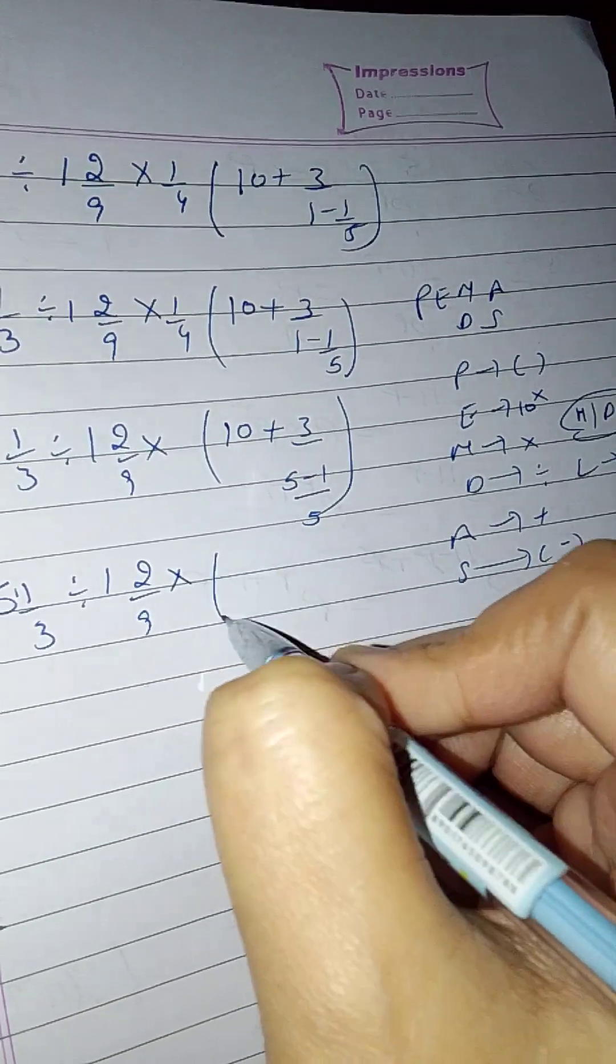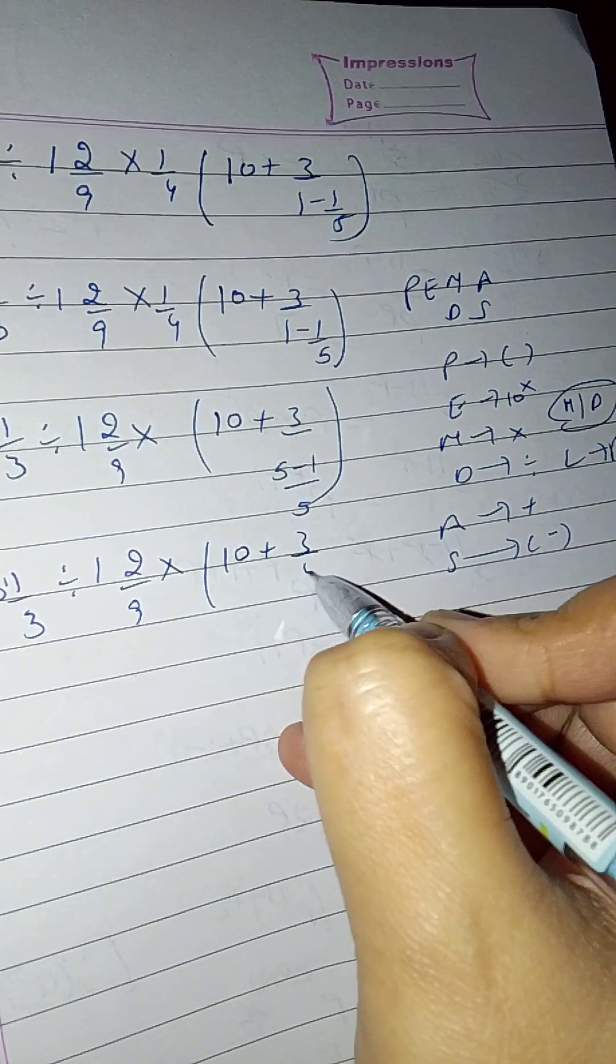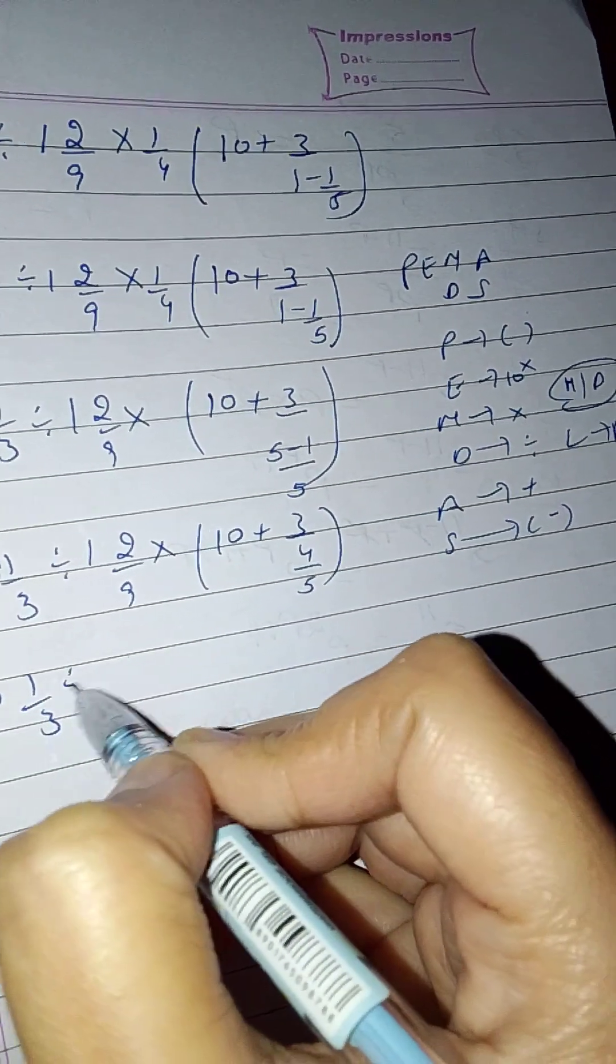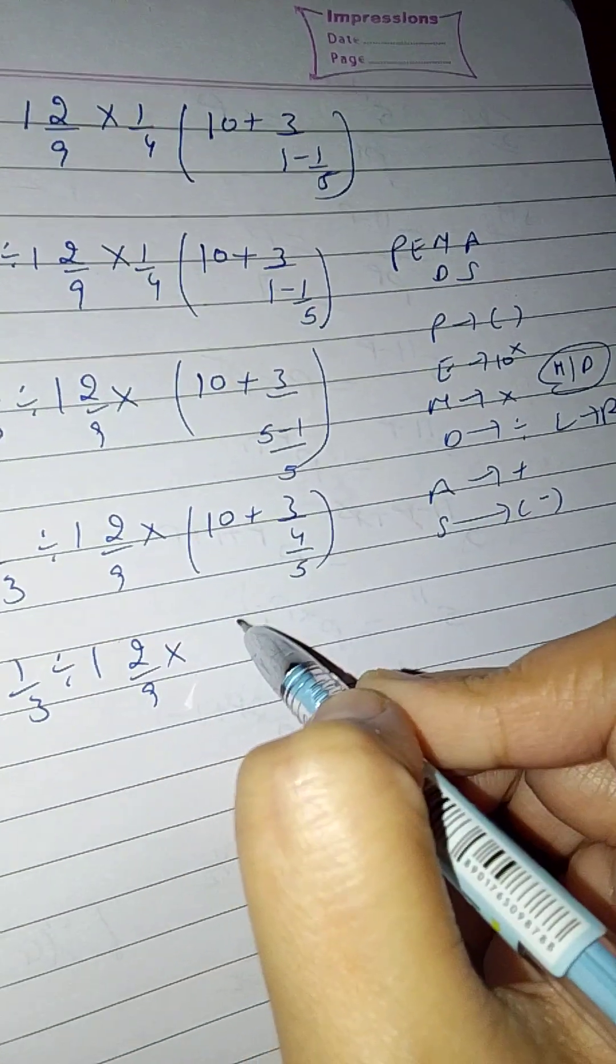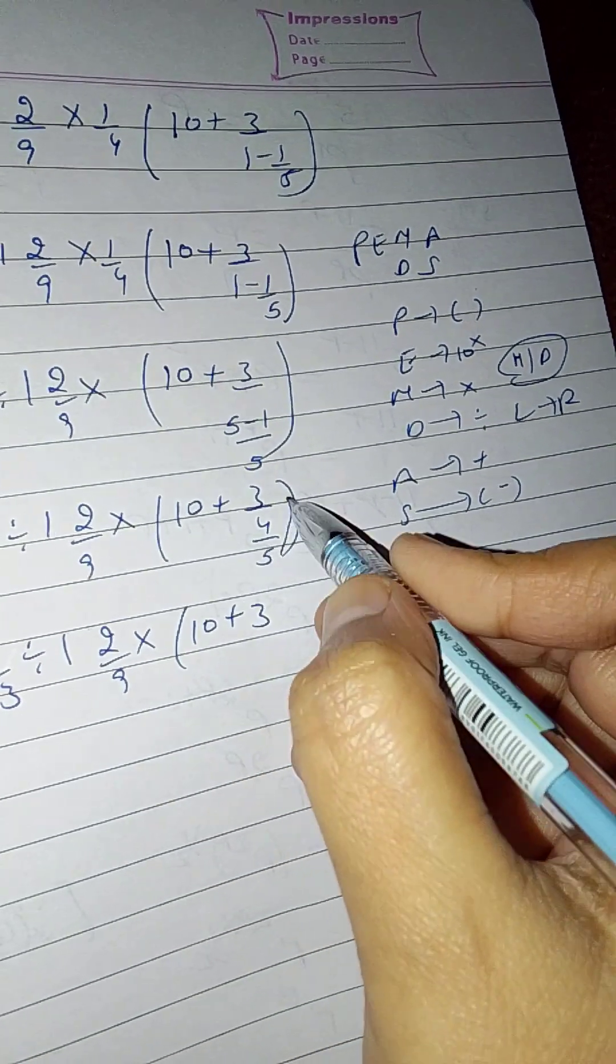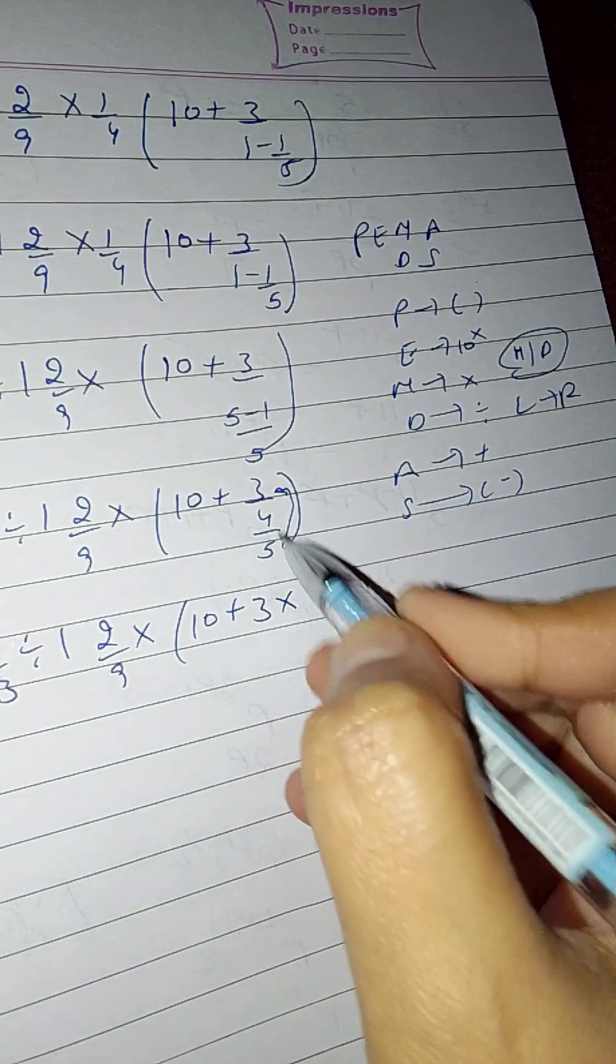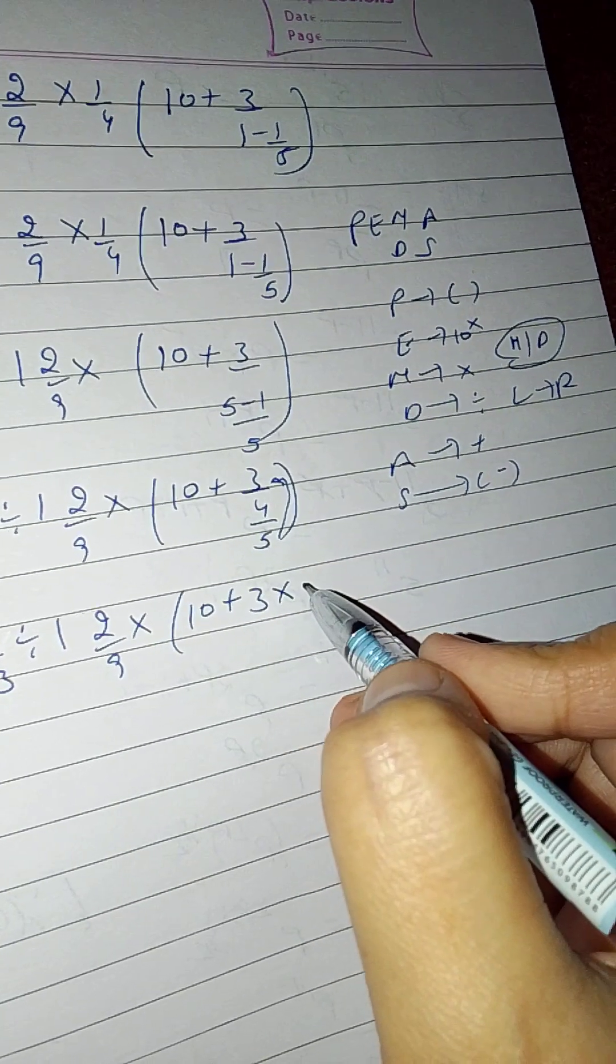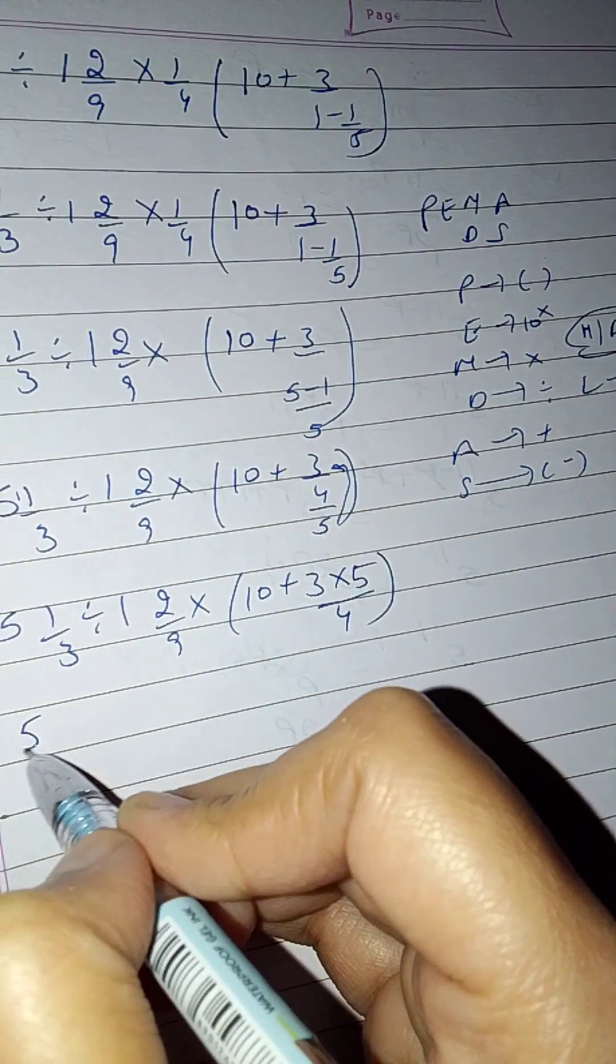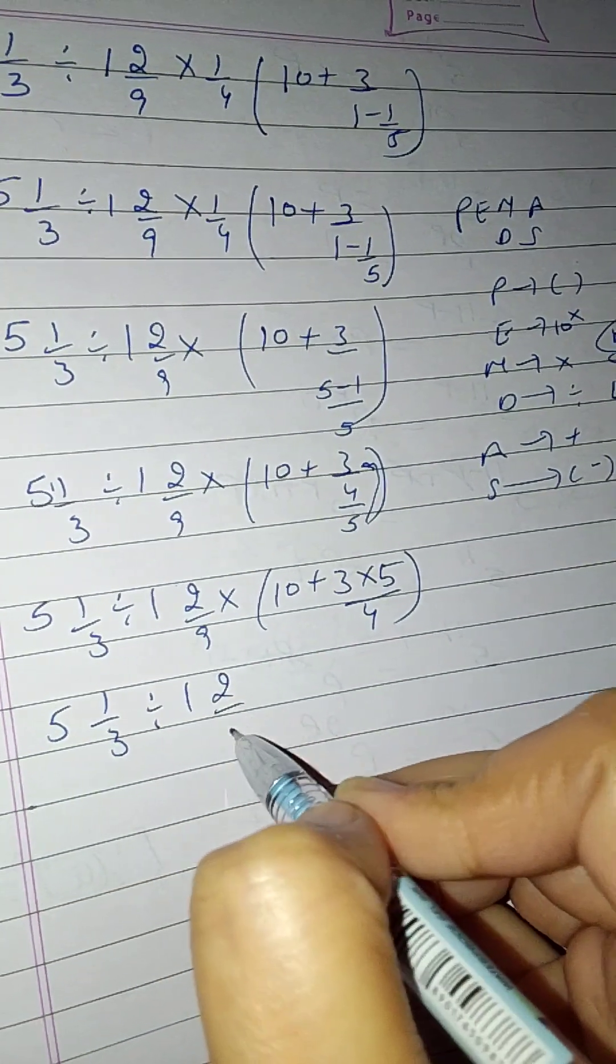5 1/3 divide 1 2/9 into 10 plus 3 over 4. This goes to the numerator, 5 over 4.